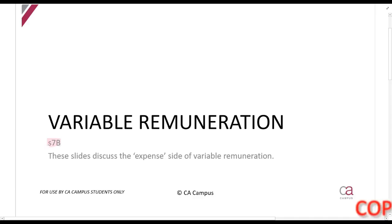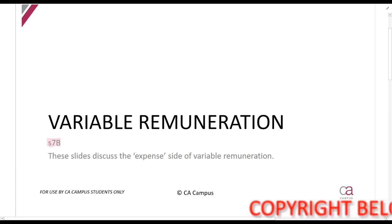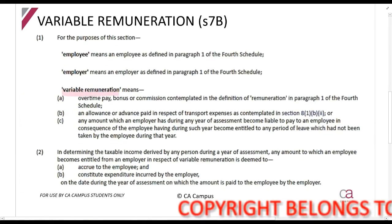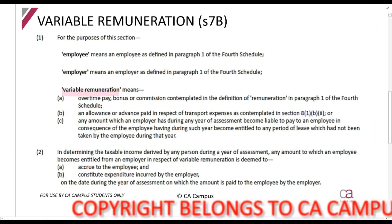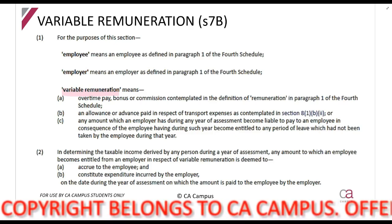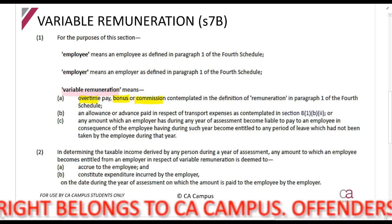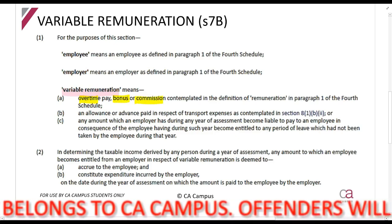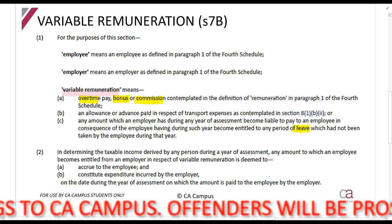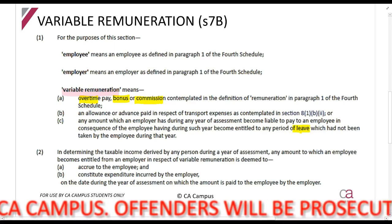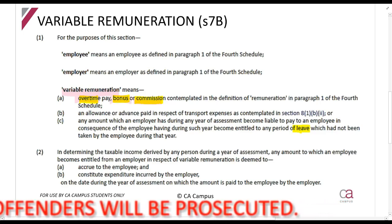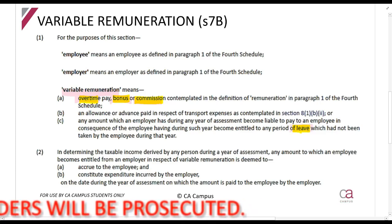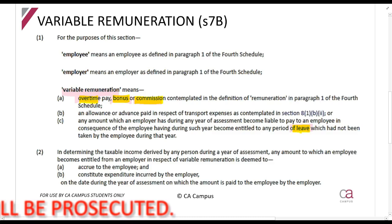We are now looking at Section 7B, the variable remuneration section. This section applies to variable remuneration amounts — 'variable' means it varies or changes. The amounts that change when you pay your employees include things like overtime, bonuses, commission, leave pay. These vary because they depend on how much overtime was worked, how much the company made, how much sales you made in commission. A salary is constant every month, but these amounts change.